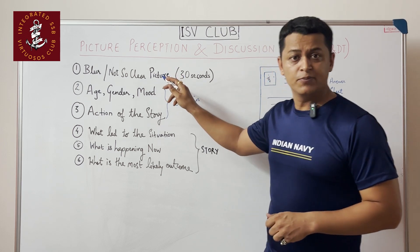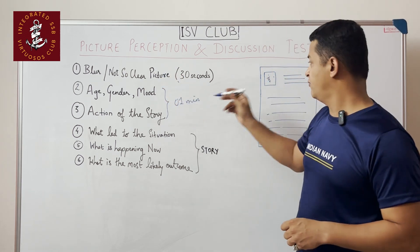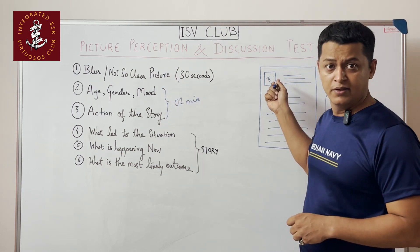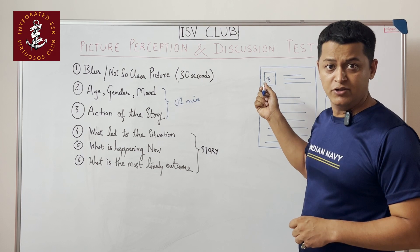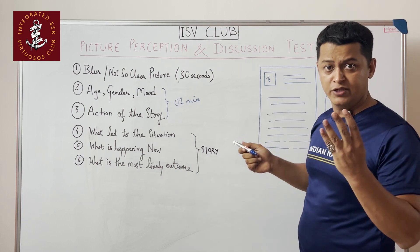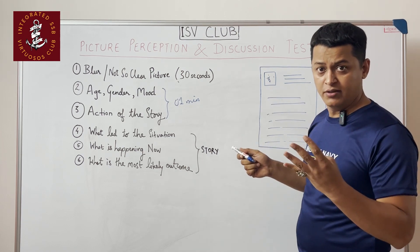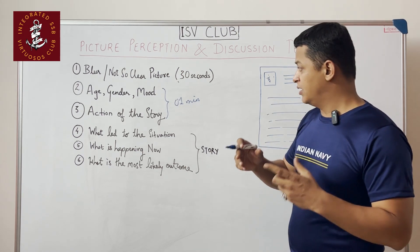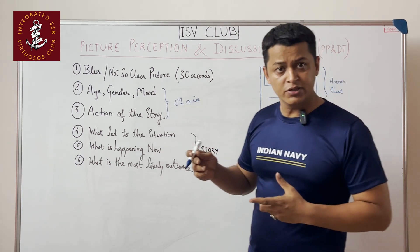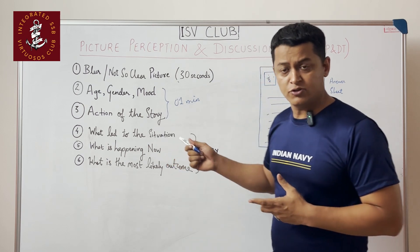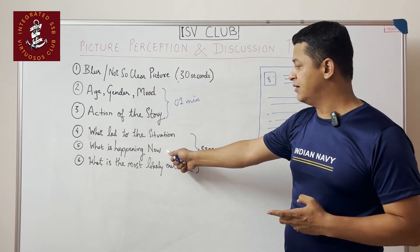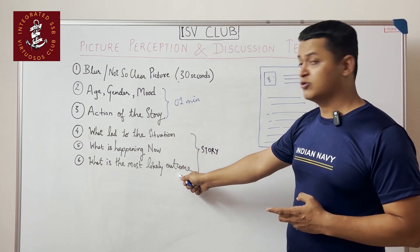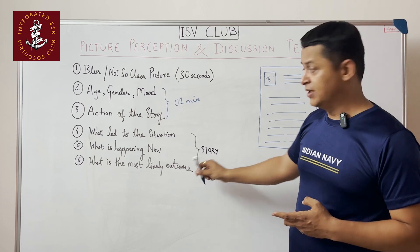You get 30 seconds to see the picture, one minute to fill the box and write the action of the story, and then you get four minutes to write the full story. You have to build up a situation and describe what led to it, what is happening now, and what is the most likely outcome.